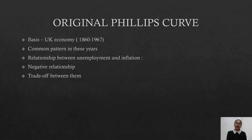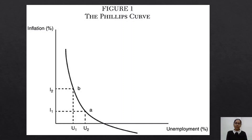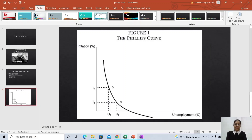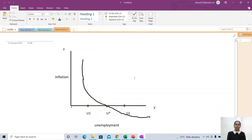Now let's understand it through diagrammatic representation. Here is a diagram — the x-axis represents the rate of unemployment and the y-axis represents the rate of inflation. At point A, unemployment is more and inflation is less. While at point B, unemployment is less and inflation is more, which depicts the negative relationship and secondly, the trade-off. This curve drawn here is downward sloping.